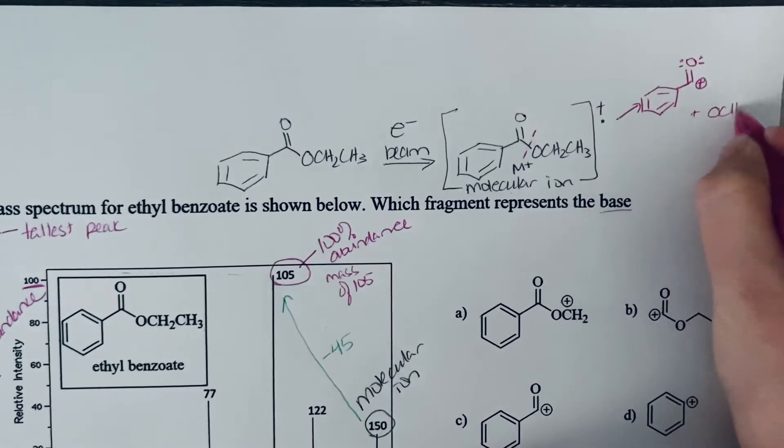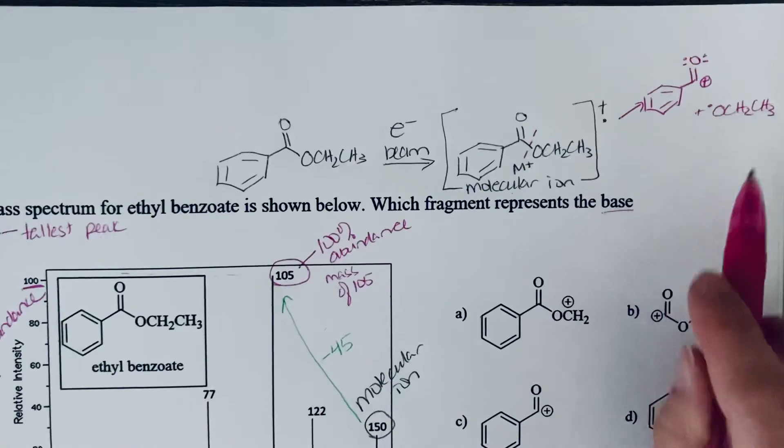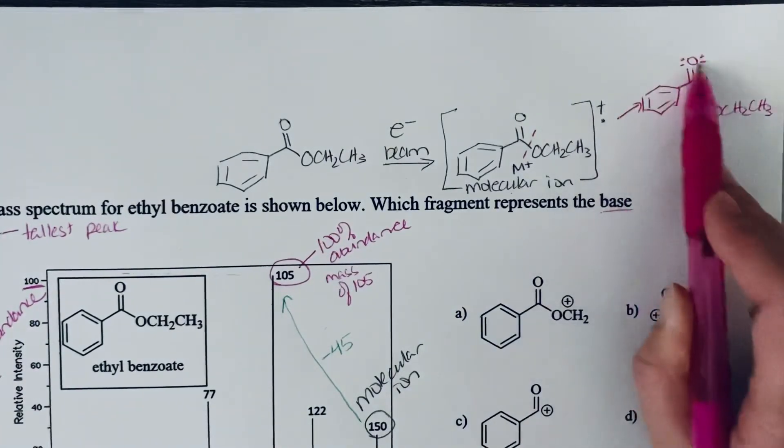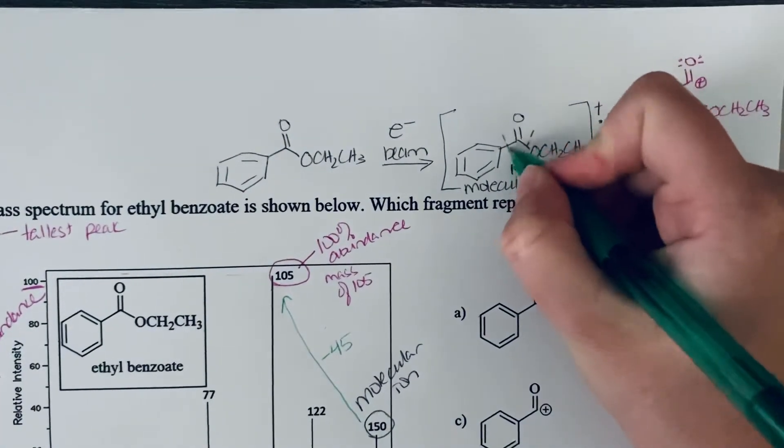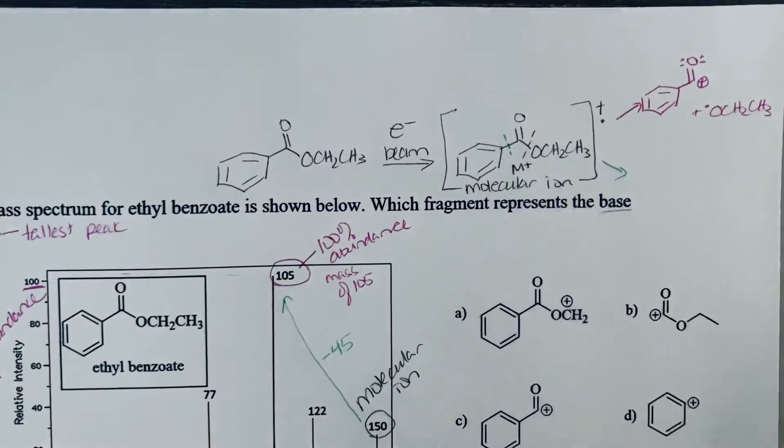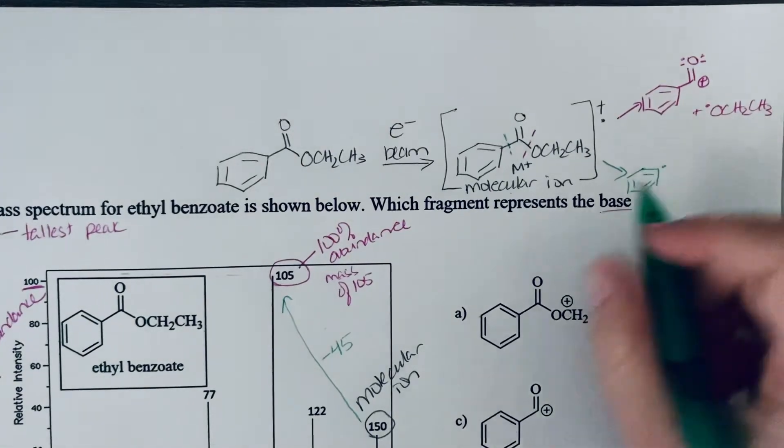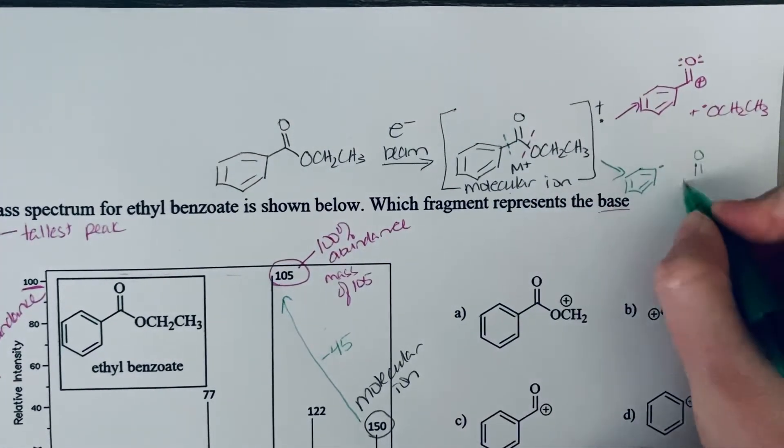You're also going to have that ethoxy group, but that's going to be a radical, not a charged ion. So that wouldn't be seen. That's what you're losing. This is what would be seen by the detector, the positive charge. Or if we fragmented the other carbonyl bond, we lose that phenyl, which would be the part that we're not going to see. The part that you would see would be the remaining cation.